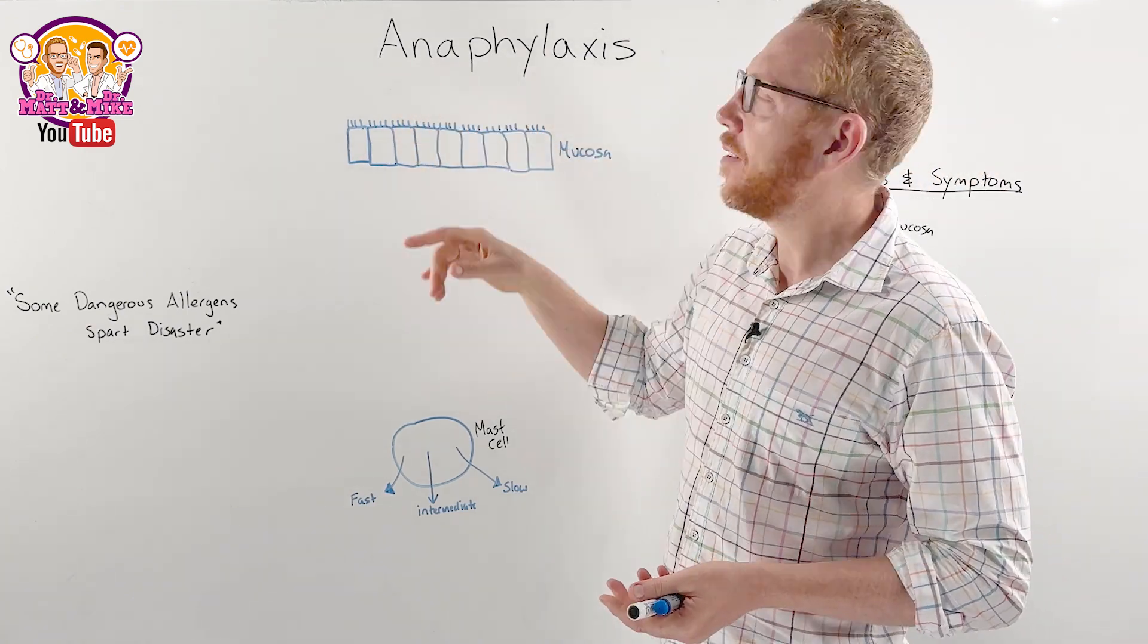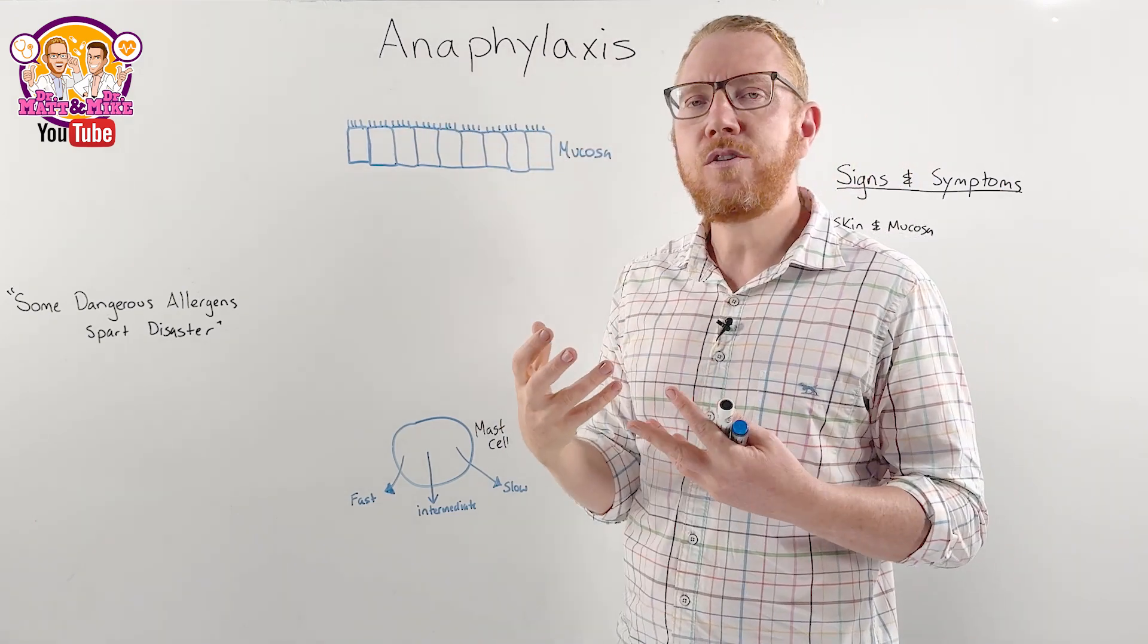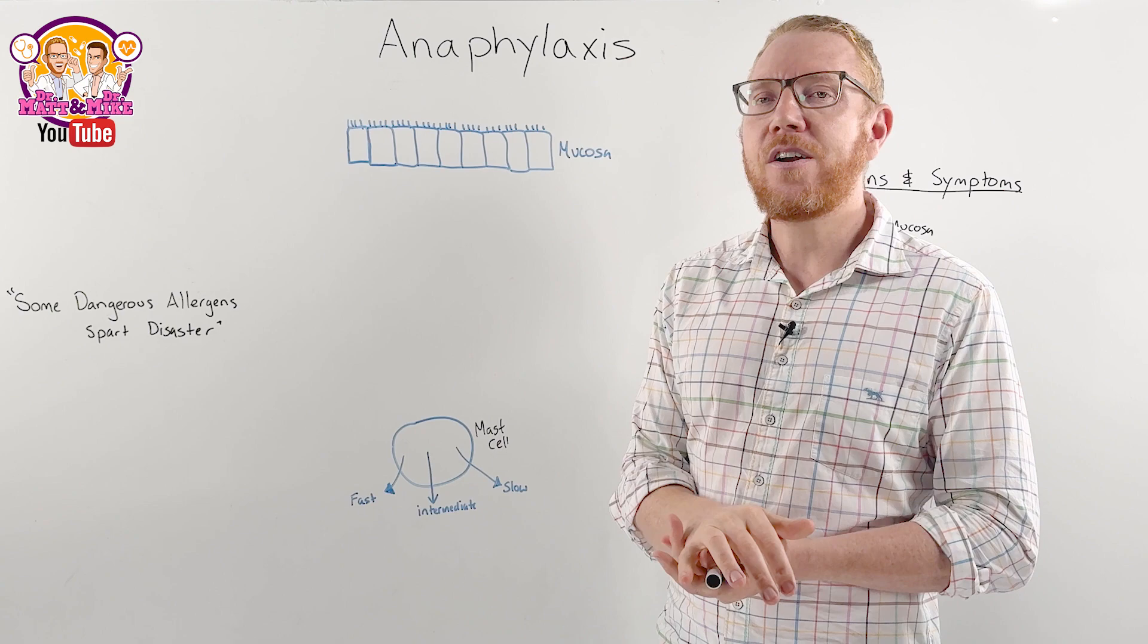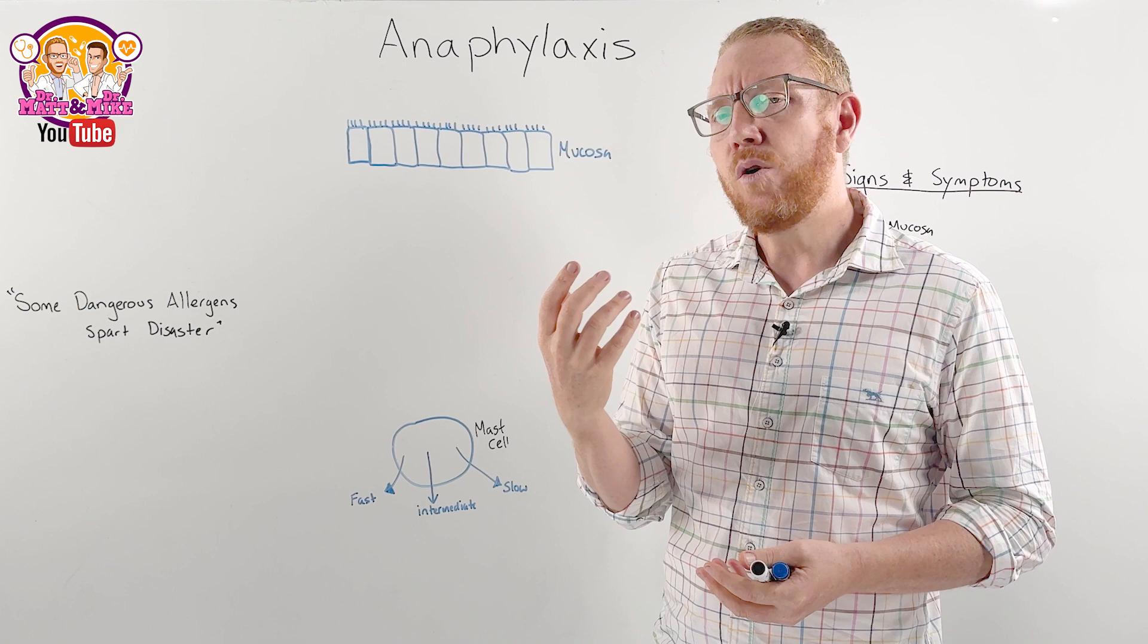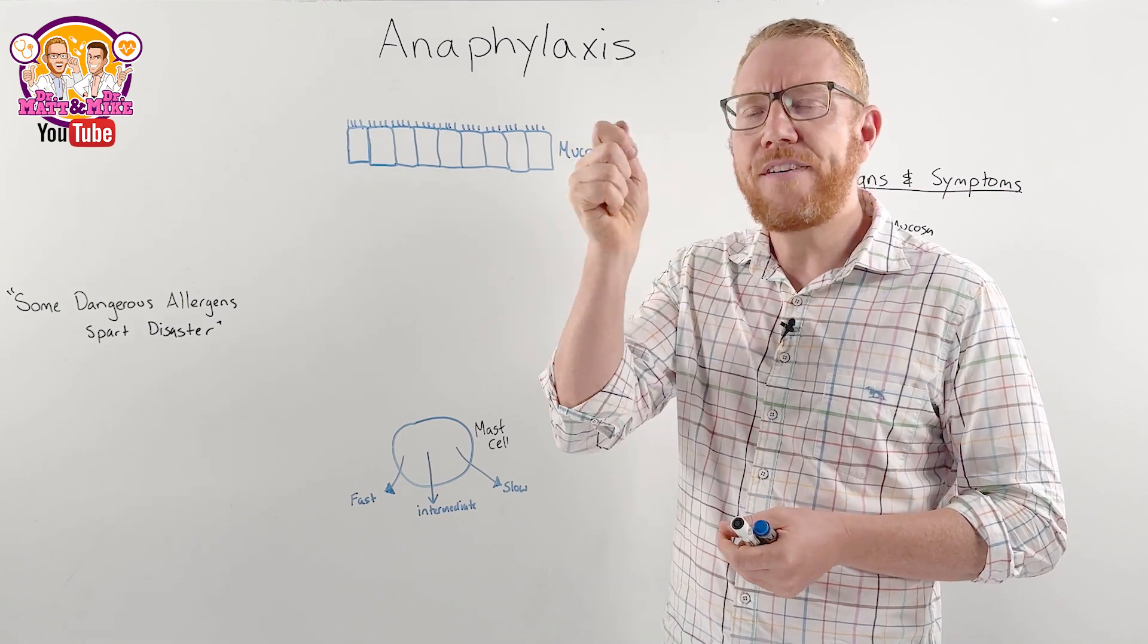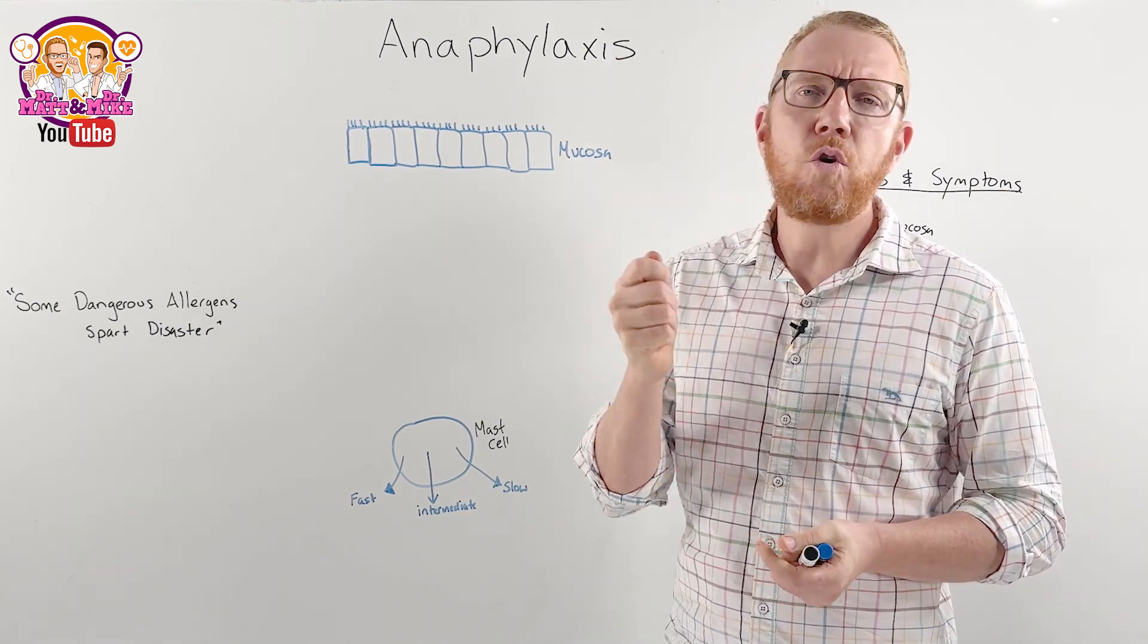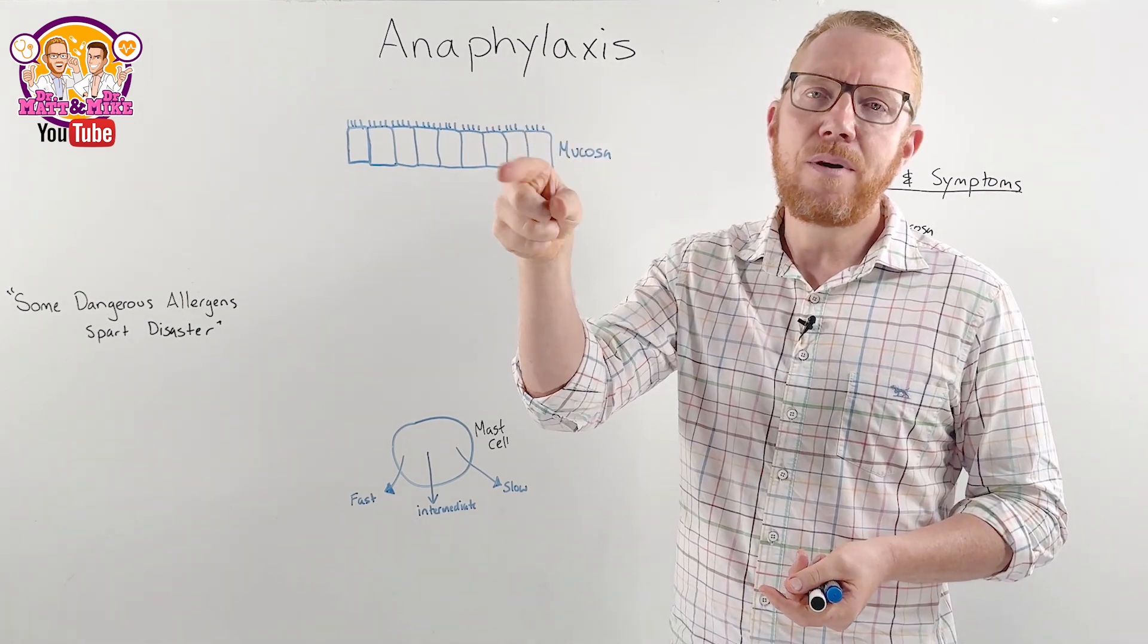Ana means to go against, phylaxis means to guard or to protect. So what it essentially means is the immune system goes against the individual, causing quite serious outcomes. So let's go back to the immune system. Why do we have it? The immune system is there to protect us from microorganisms primarily, to protect us from bacteria and viruses and fungus that can cause disease. It also can get rid of damaged and diseased cells or cancerous cells.